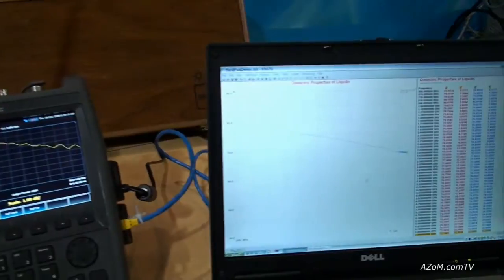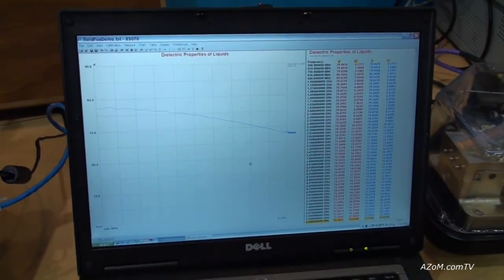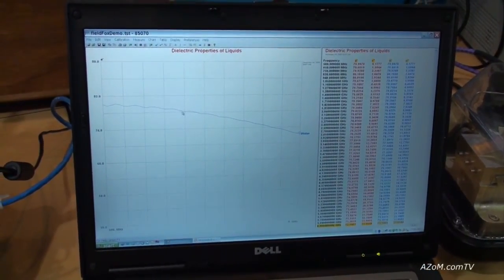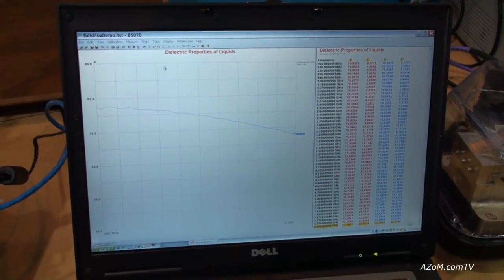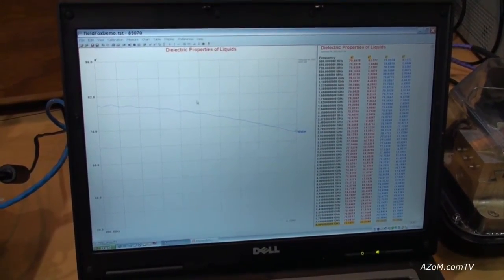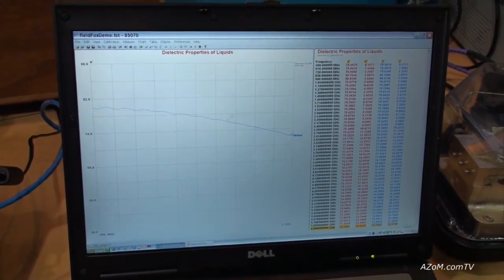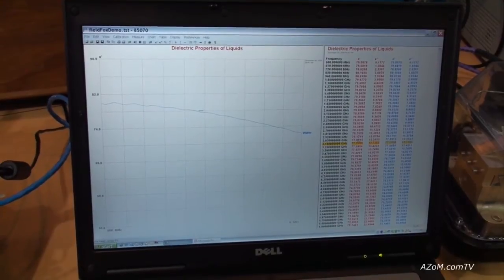So we have a software package that drives the network analyzer and does the calculation for you. I'll show you just a couple of things with the software. Here we're looking at the real part of permittivity. We have a chart, and then we also have table data. You can select any frequency point along it and get your readout over here.